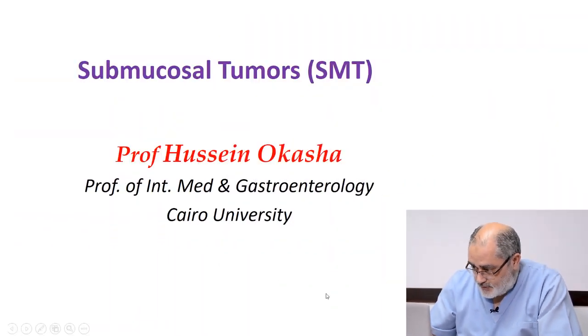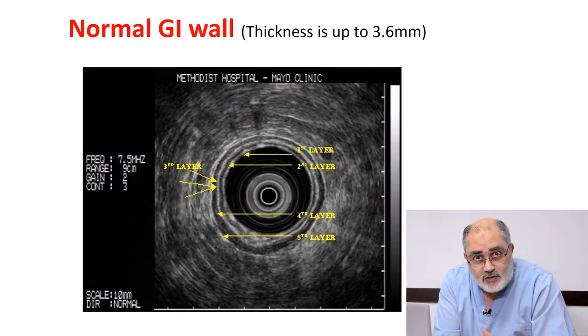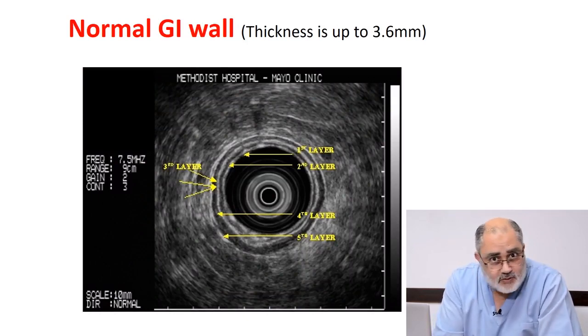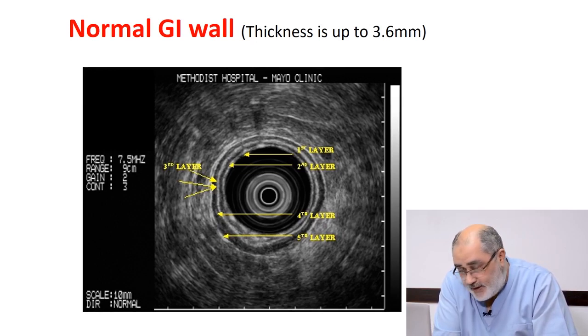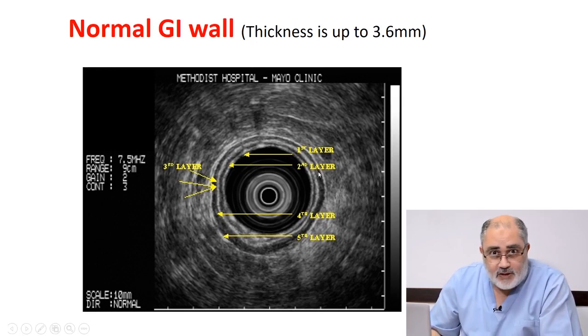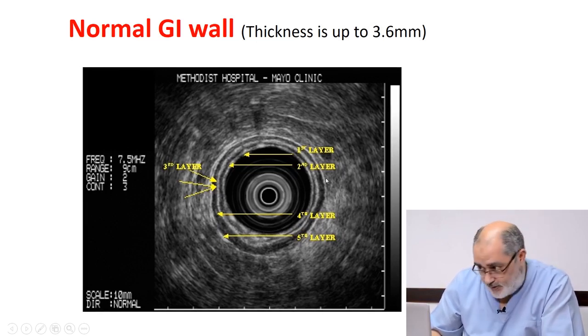Welcome. In this short presentation we will talk about submucosal tumors. Submucosal tumors by definition is any bulge from the GI wall — whether the esophagus, stomach, duodenum, rectum, and so on — any bulge covered by normal mucosa. So submucosal tumors arise from a layer deeper than the mucosa: they arise from the muscularis mucosa, from the submucosa, or from the muscularis propria.